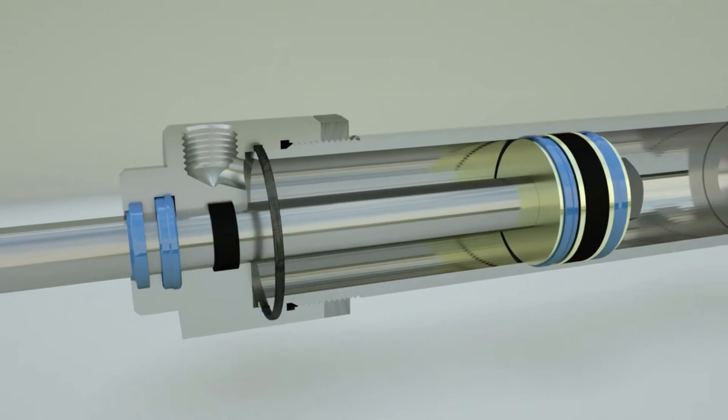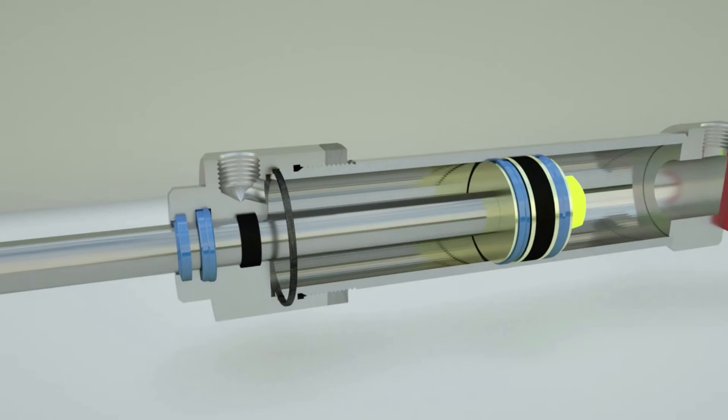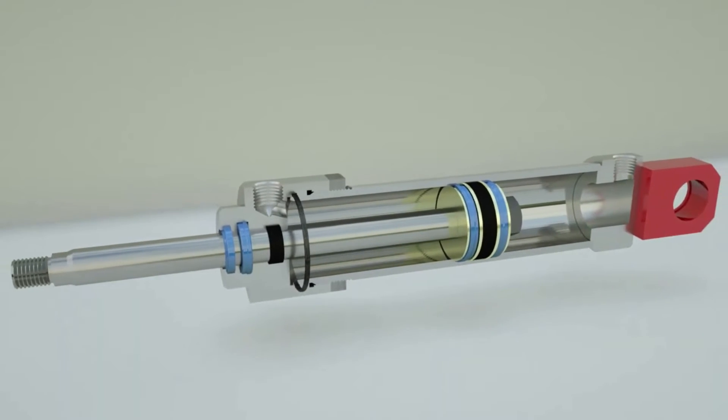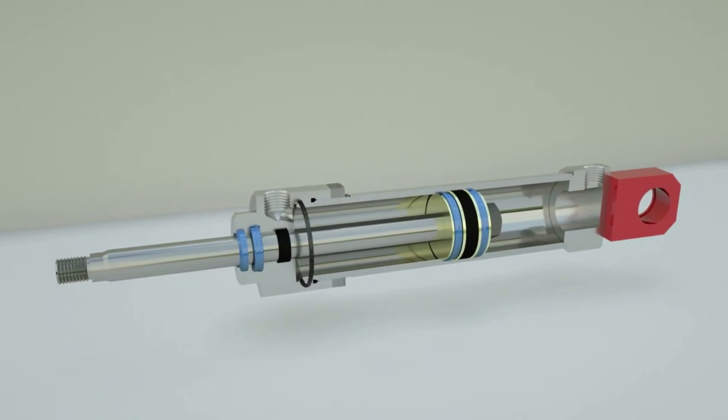Otherwise, the liquid will leak out of the hydraulic cylinder. The pressurized liquid enters the cylinder chamber and displaces the piston to which the piston rod is attached.